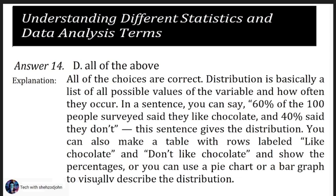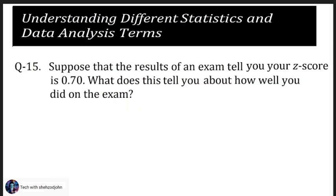The answer to question 14 is choice E: all of the above — all of the choices are correct. Distribution is basically a list of all possible values of the variable and how often they occur. In a sentence you can say 60 percent of the 100 people surveyed said they like chocolate and 40 percent said they don't. You can also make a table, a pie chart, or a bar graph to describe the distribution.